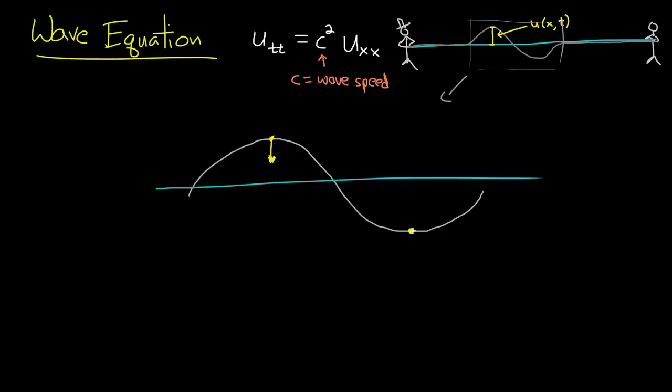Similarly, over here at the bottom of this valley, the string around that little piece where the yellow dot is, that string is curved upward, and so it's exerting an upward force there. The tension of the string is pulling it up. So I'll draw that arrow there.